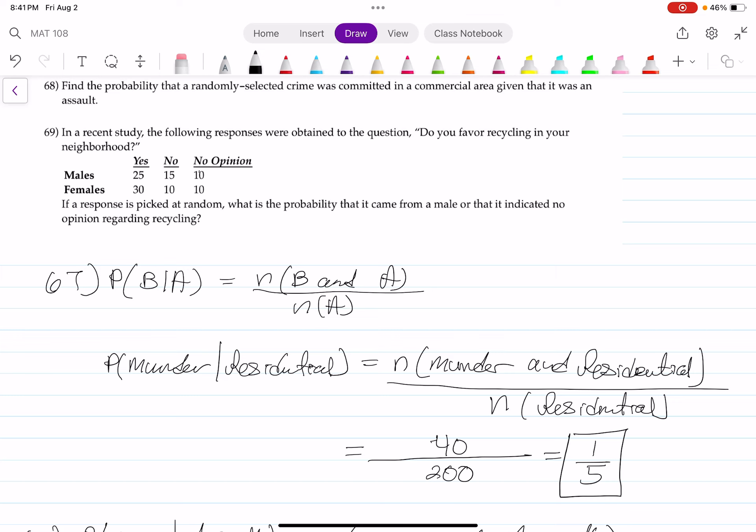Male, no opinion, is 10. Female, no opinion, is also 10. So the no opinion category has a total of 20 voters.